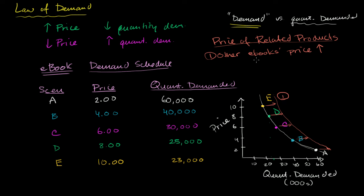These other ebooks we can call substitutes for my product. Substitutes — people might say that other book looks kind of comparable; if one is more expensive or cheaper, maybe they'll read one or the other. In order to stay along this curve, we have to assume that this thing is constant. If other ebooks' prices go up, it'll shift our curve to the right. If other ebooks' prices go down, that will shift our entire curve to the left.